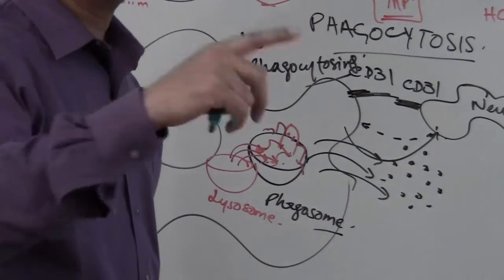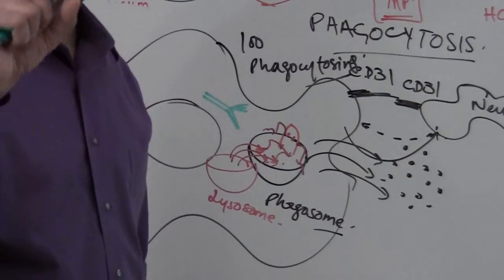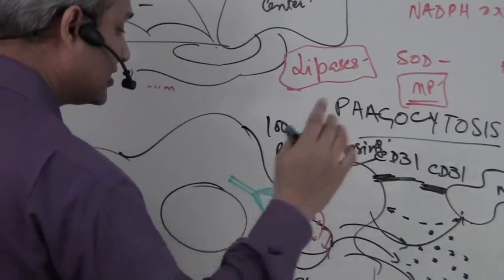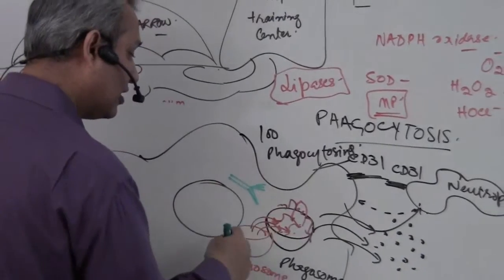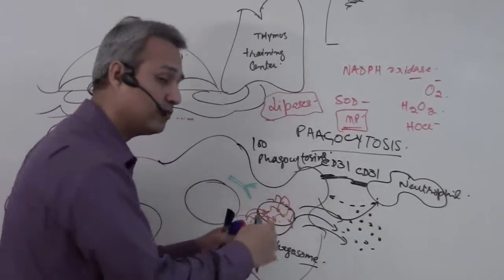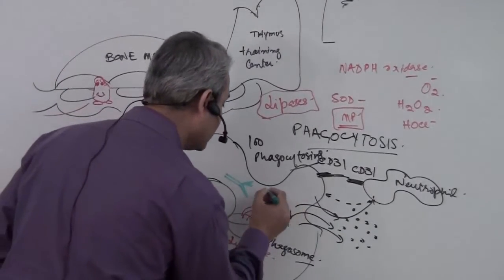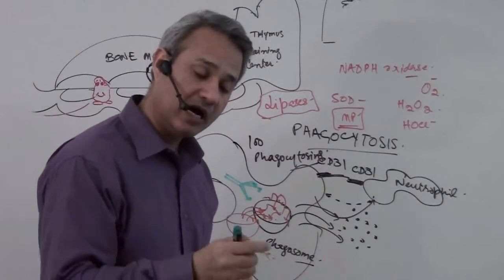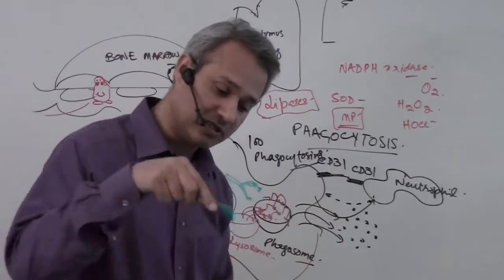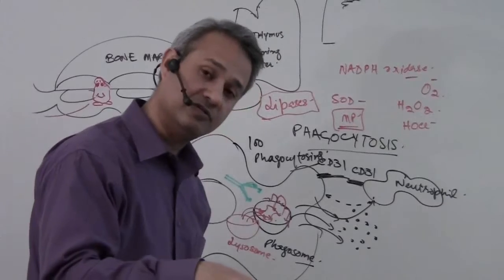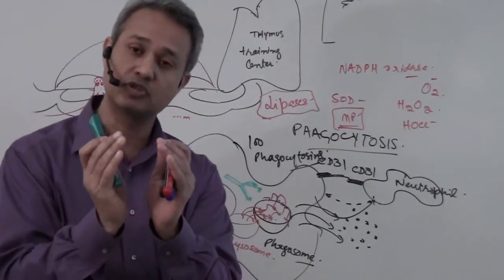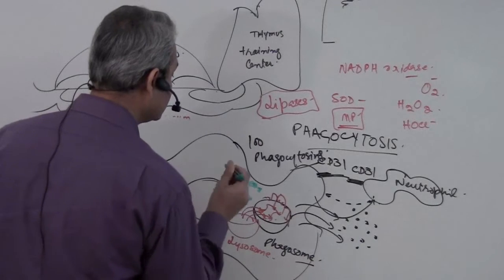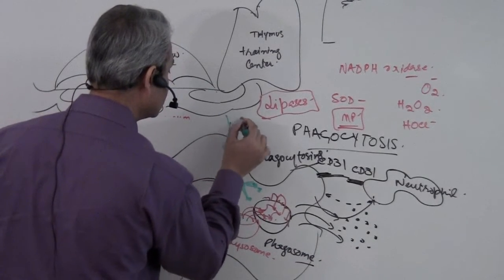All nucleated cells have MHC 1, and professional APCs have MHC 2. The pathogen is broken up by digestive enzymes, and pieces of the pathogen are tried on the MHC 2. The pathogen keeps getting broken until the pieces fit on the MHC 2. Once they are attached to MHC 2, the MHC 2 will be recycled to the surface of the macrophage for antigen presentation.